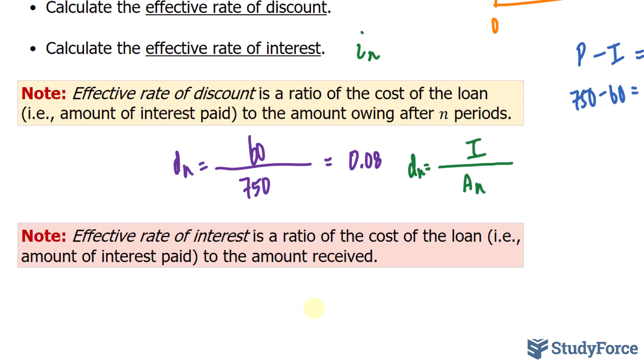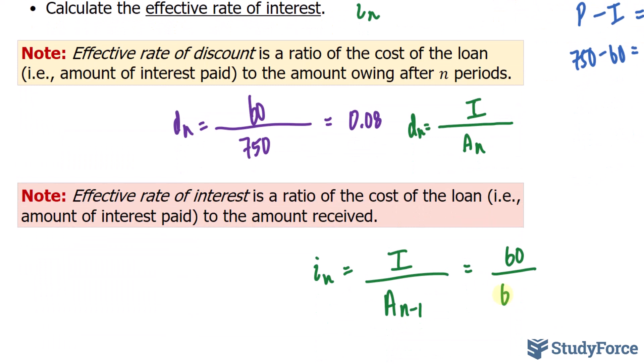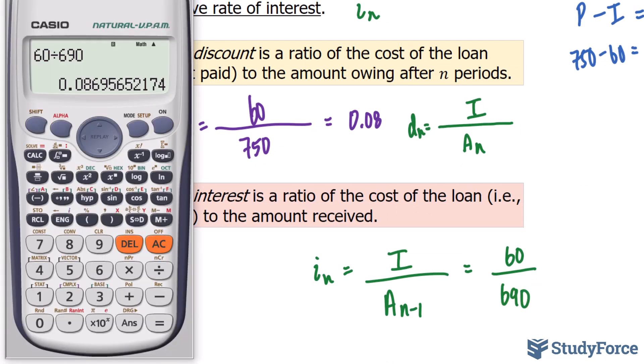So, if we're denoting this as I sub N, we'll write down I, which is the amount of interest paid, to the amount received. And for us, that was denoted as A sub N take away 1. To input these values, we already know that I is equal to 60. We know that we are being forwarded $690. And if we divide this out using our calculator, as you can see on the screen, you end up with a value that's roughly 0.08695.